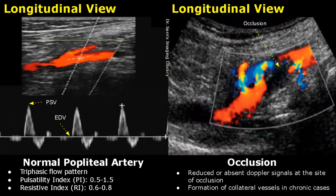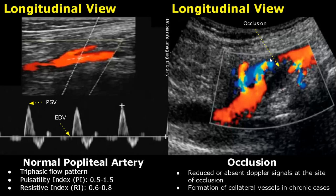Occlusion refers to the total obstruction of a blood vessel. Reduced or absent Doppler signals are seen at the site of occlusion — in this region we do not see any Doppler signal. In chronic cases of occlusion, we will find collateral vessels right next to the site of occlusion.